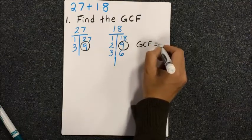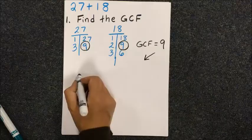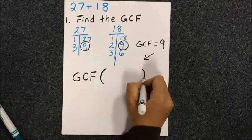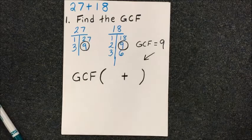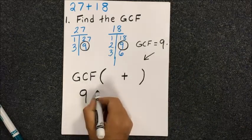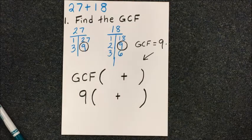Going through our list, the greatest common number that we have is 9, so our GCF is 9. We're going to write that first in our setup, and then we'll have the product with the other sum written on the inside.